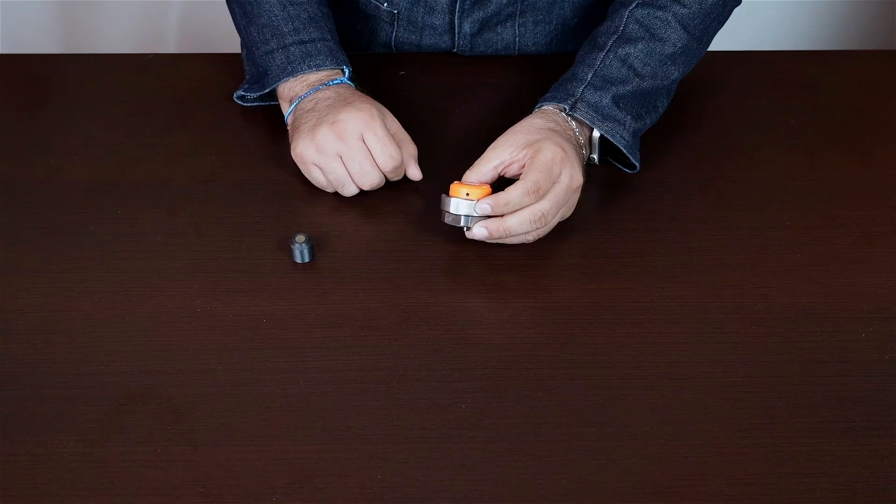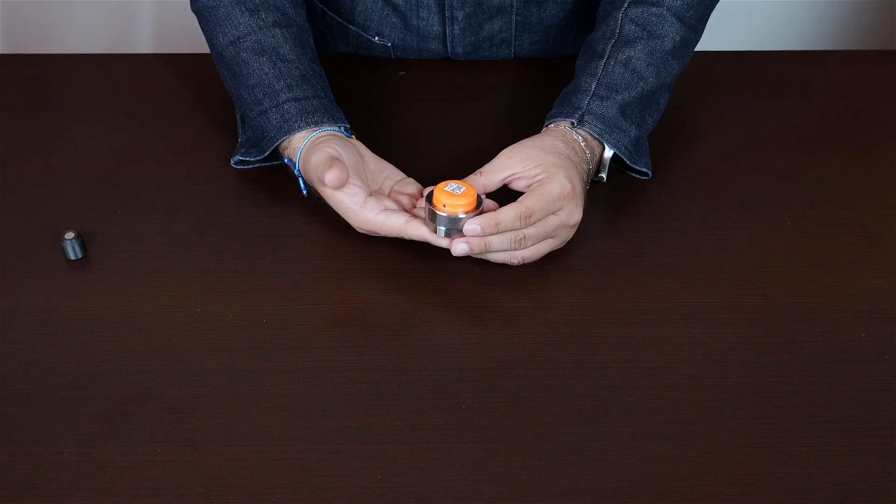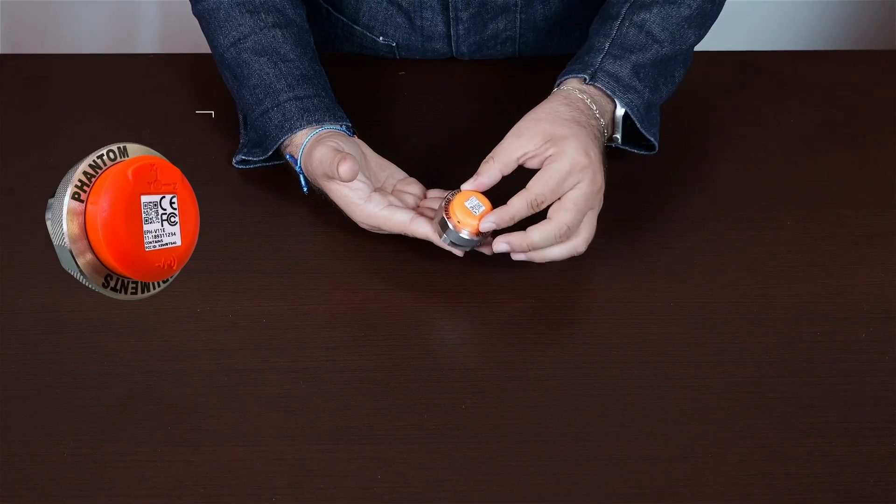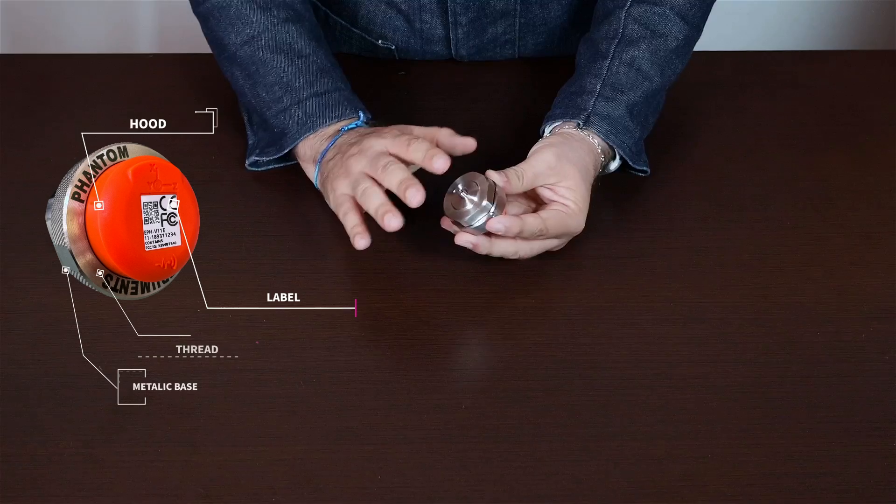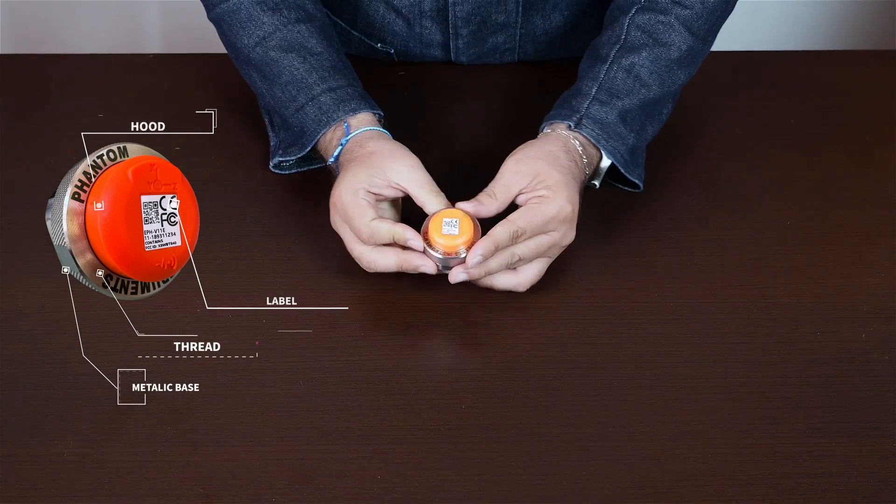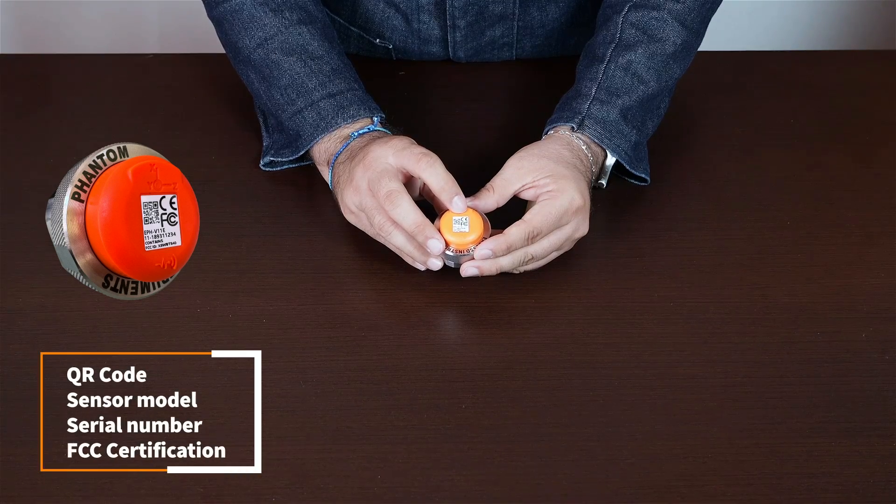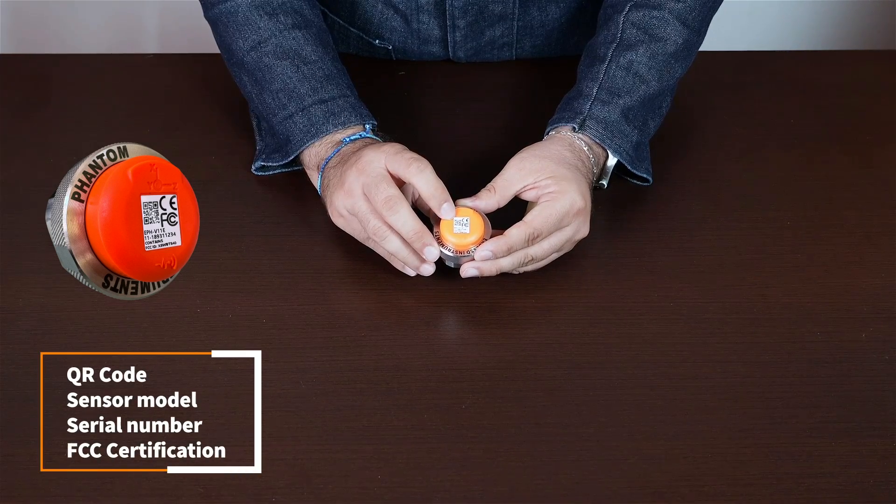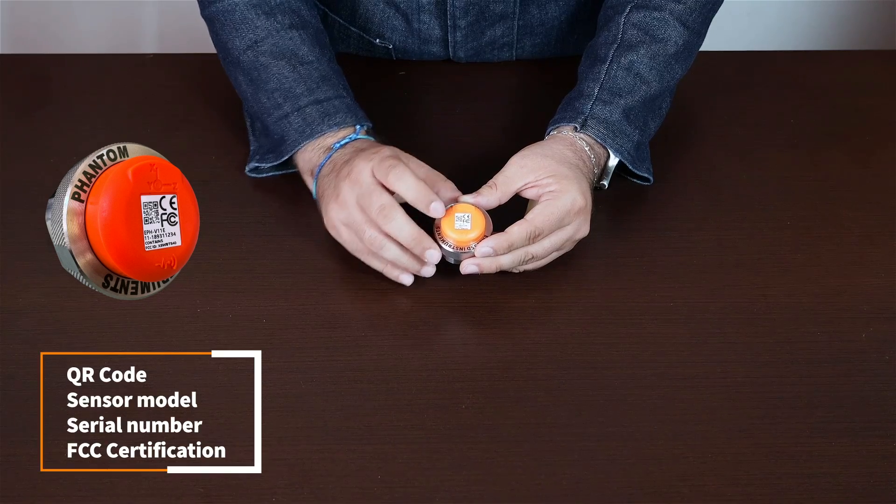Let's examine the parts of our triaxial vibration sensor. The vibration sensor consists of three essential parts: the plastic section with the label, the thread, and the base. On the label, you will find important information about certifications, the QR code that uniquely identifies this sensor, the sensor model, its serial number, and the FCC communication certification.